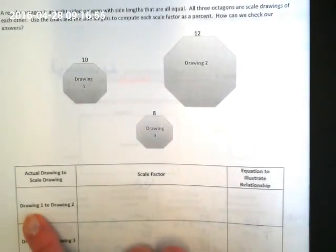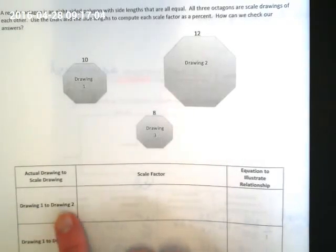So when it says drawing one to drawing two, your drawing one is your original and it's going to go on the bottom. And we're saying we're taking it from this to this, so this would become our scale drawing, and two would go on top. Make sense?